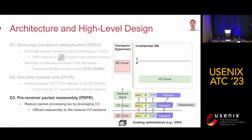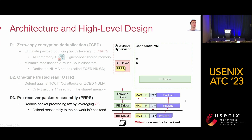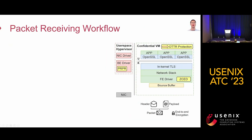Third, pre-receiver packet reassembly (PRPR) can reduce packet processing tax by leveraging the third observation. Specifically, we offload the reassembly logic from the frontend driver to the backend, freeing up precious vCPU resources for the CVM to process more application workloads.